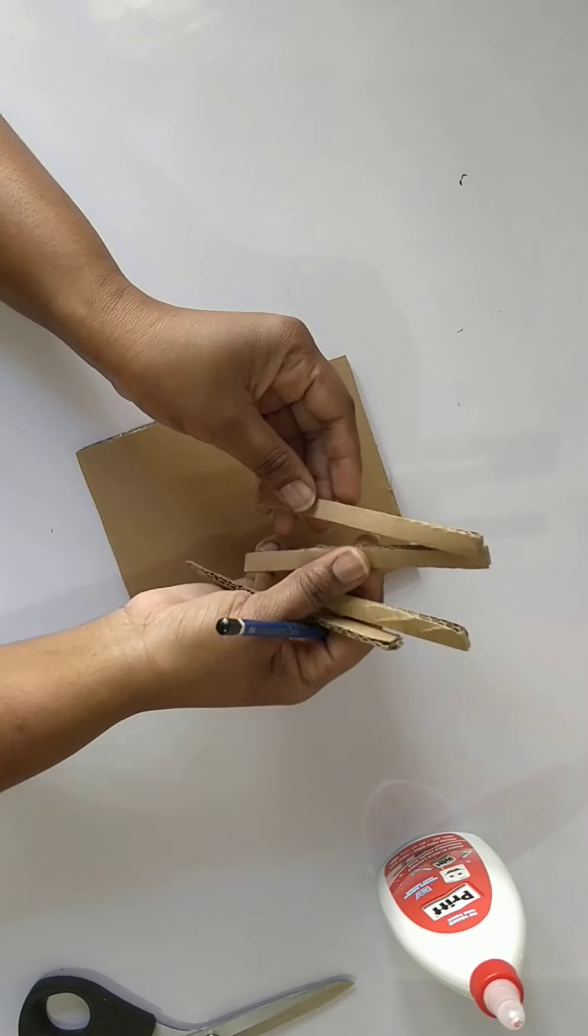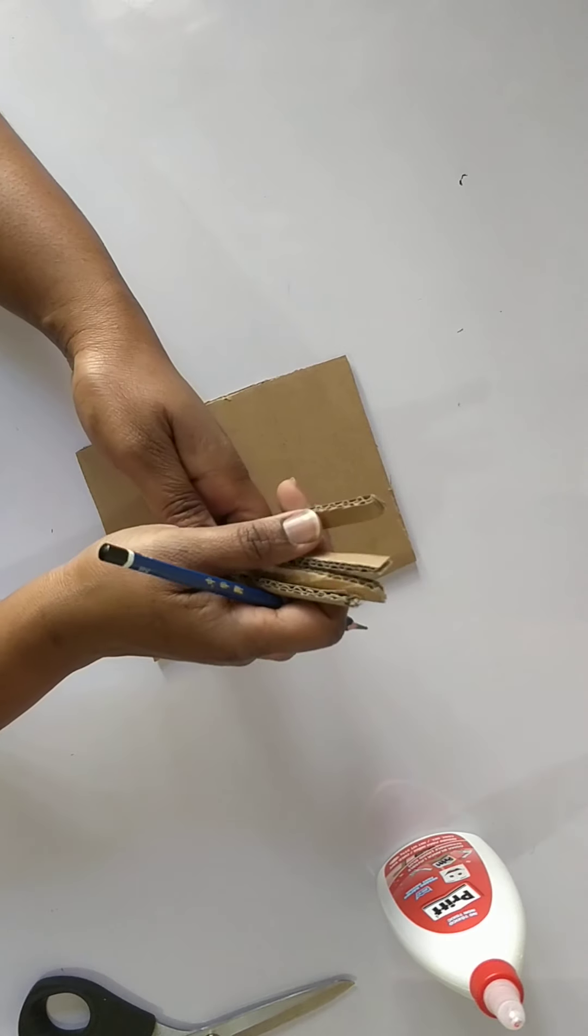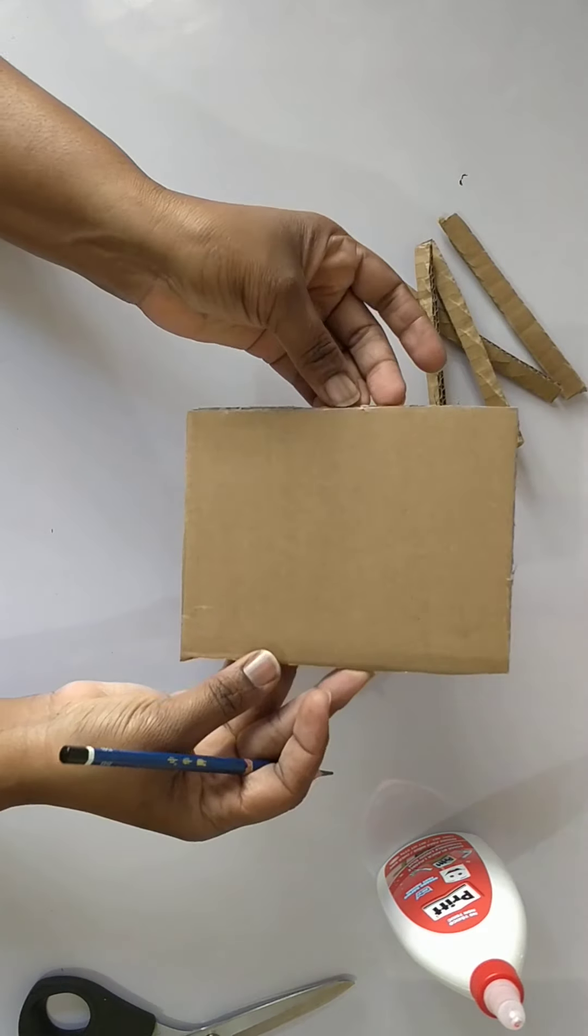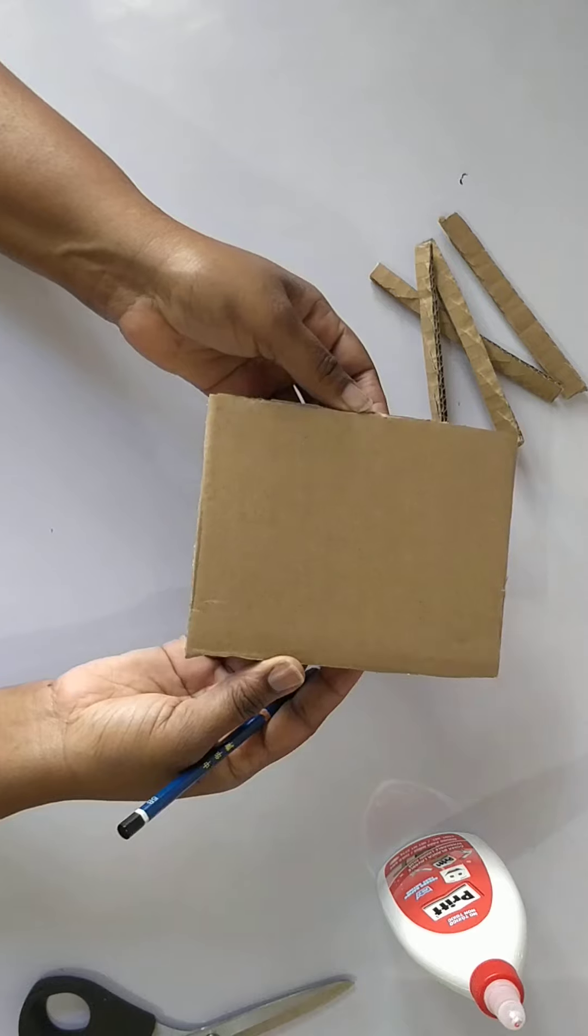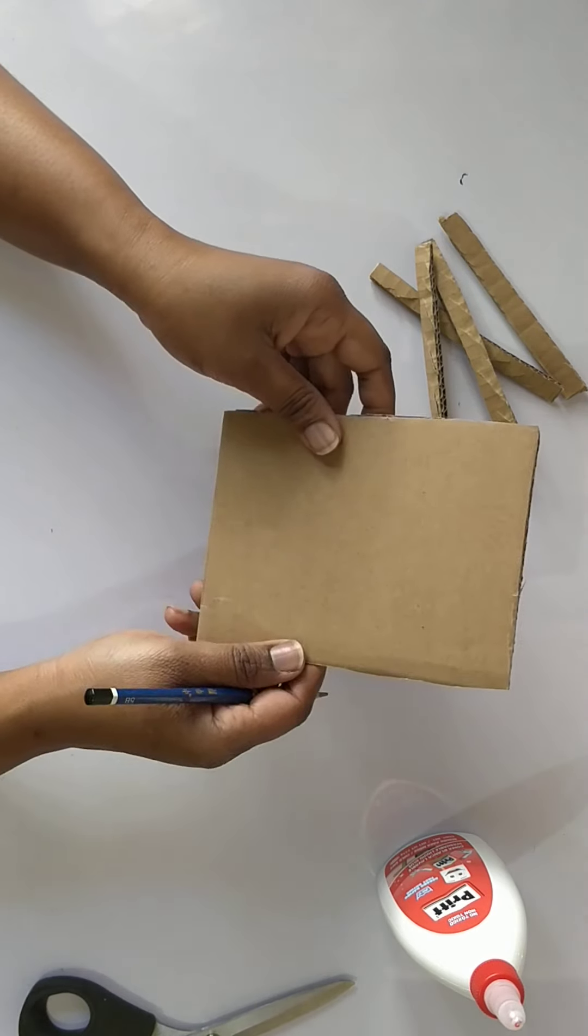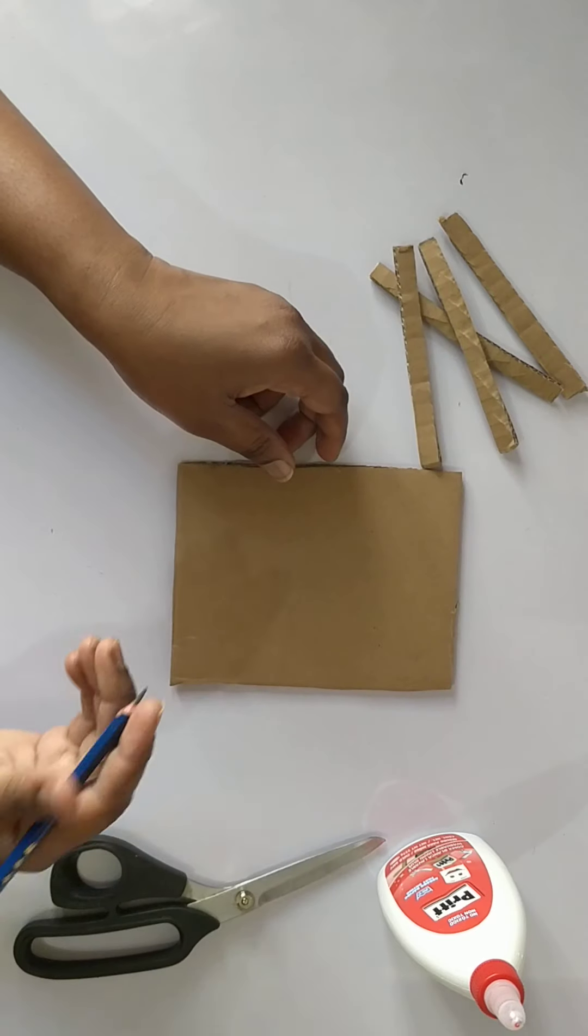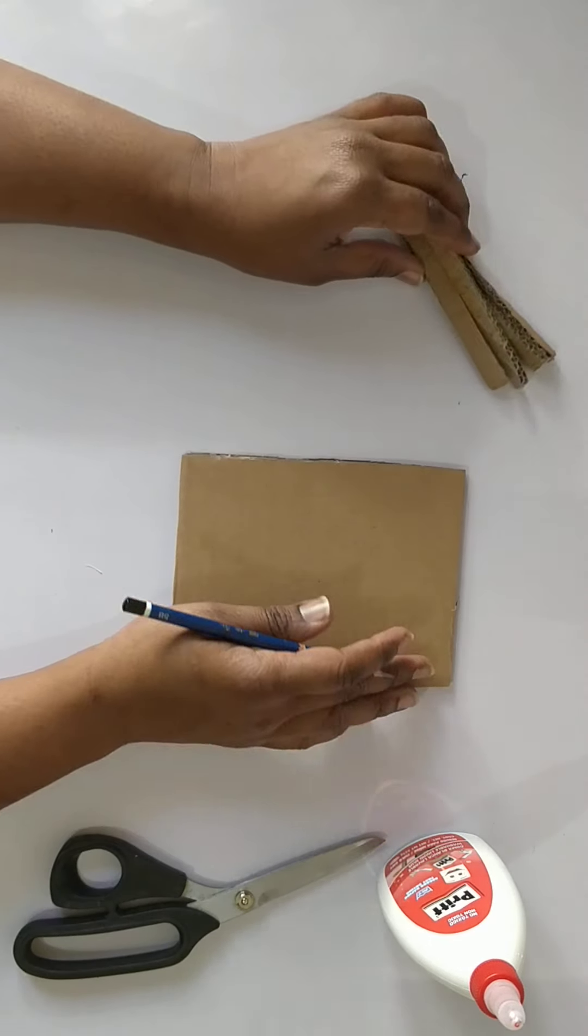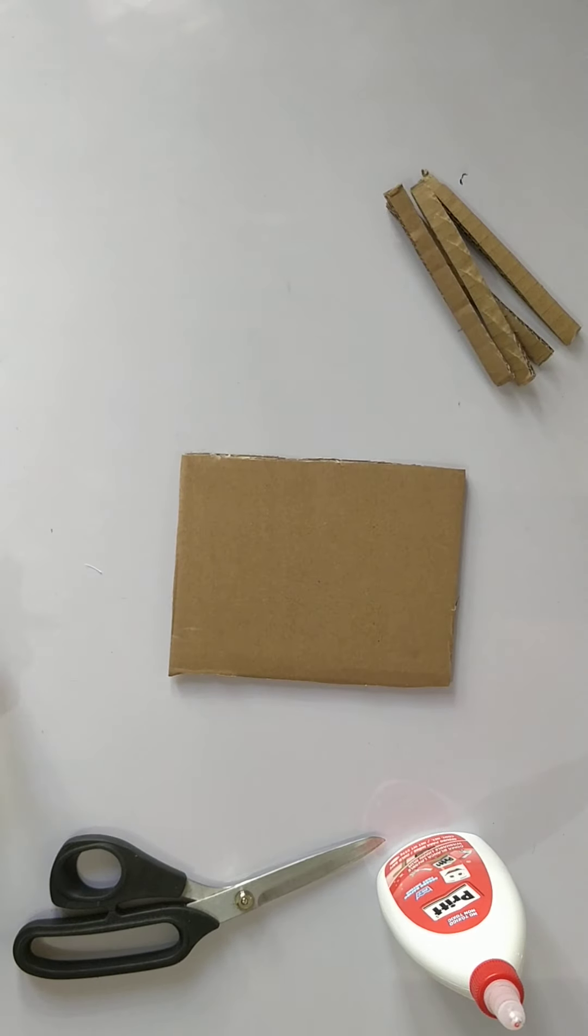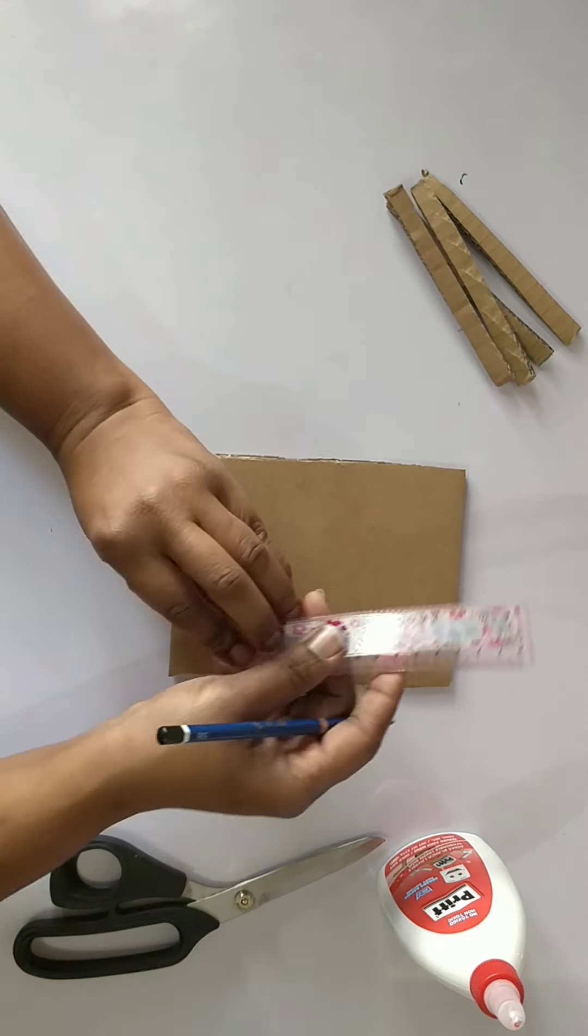You're going to need four strips of cardboard, a piece of cardboard the size of the loom that you want to make, a scissor, a pencil, and a ruler.